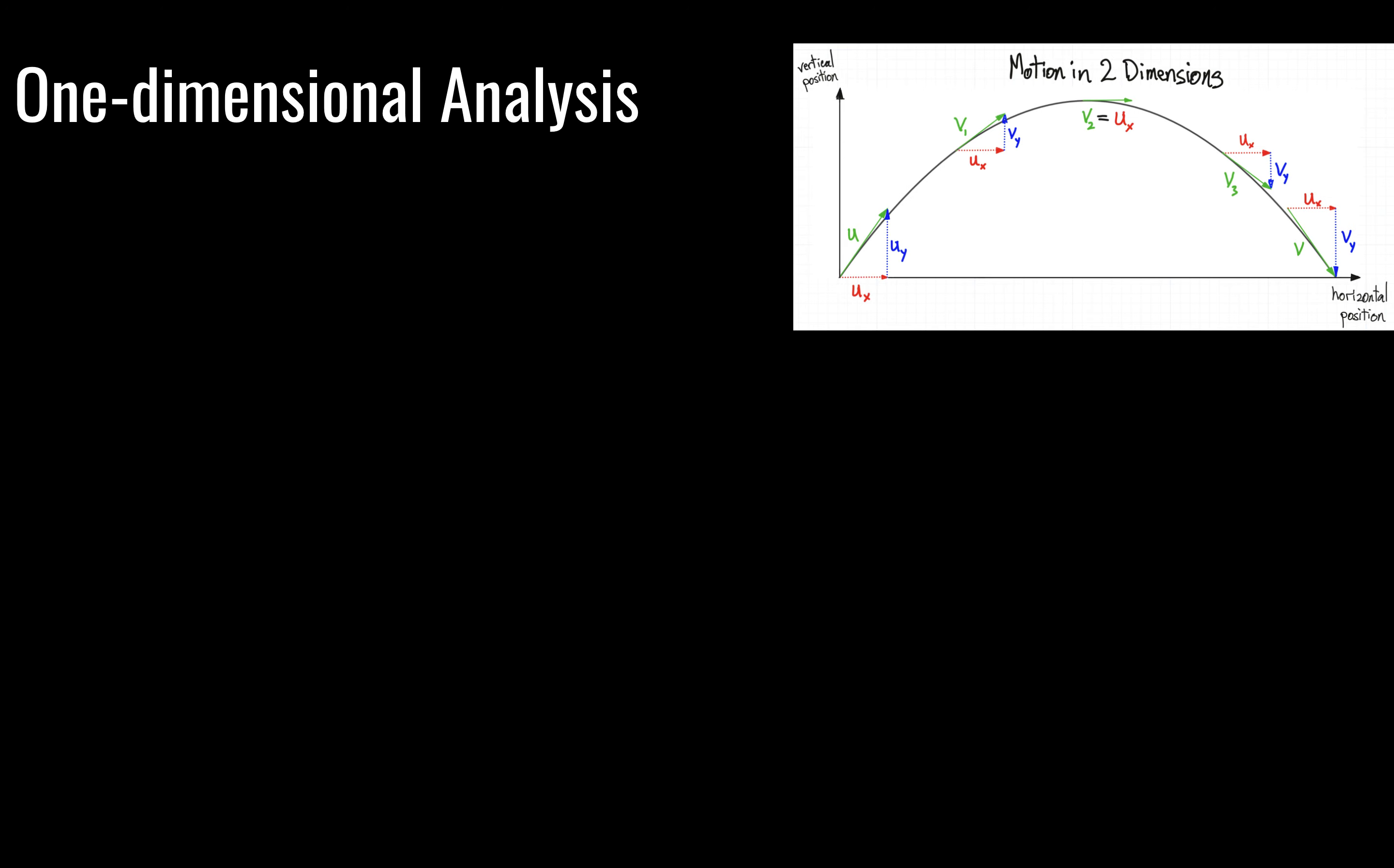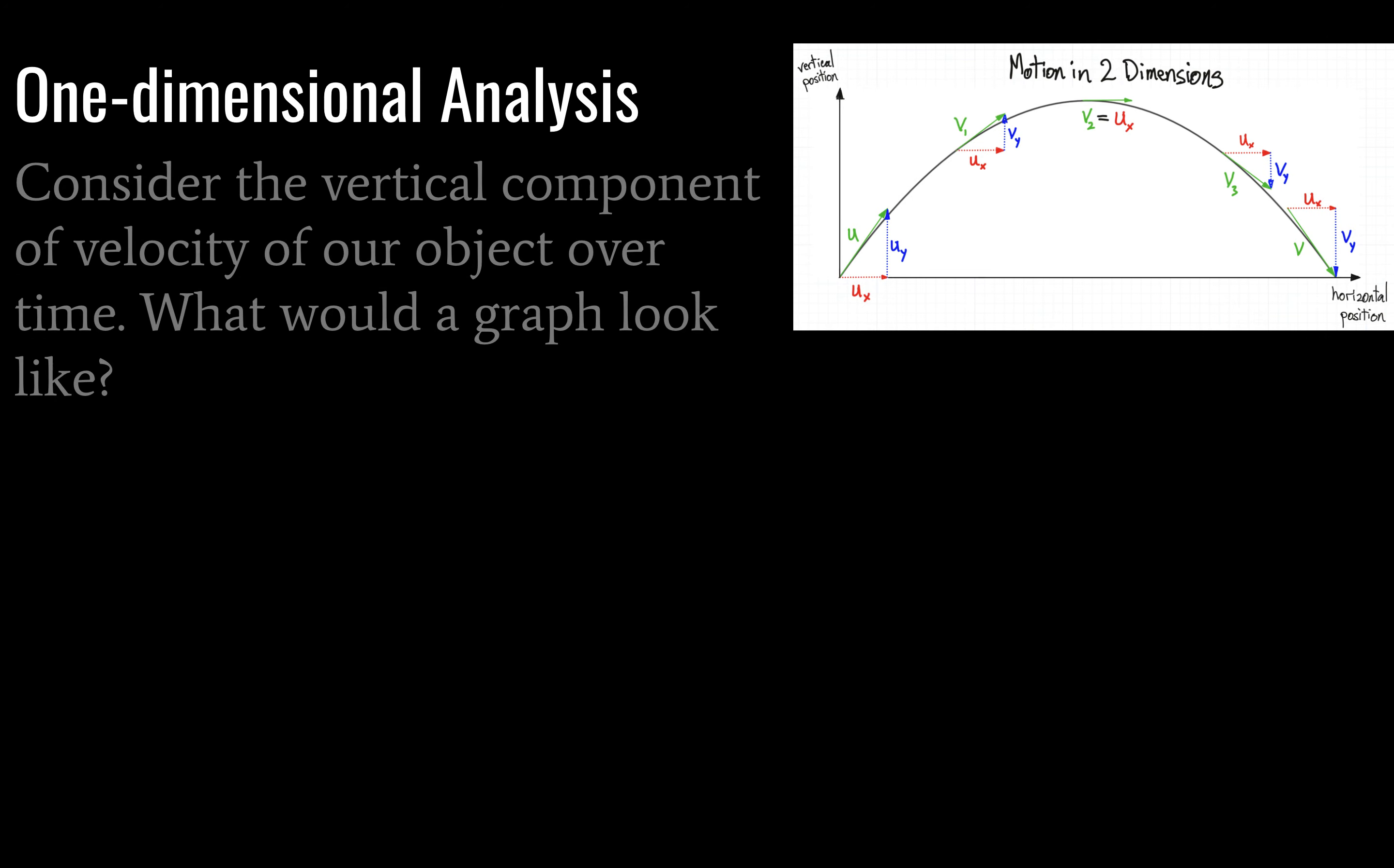One dimensional analysis. What are we dealing with here? So we've been looking at a chart showing the motion of an object through two dimensions. Consider the vertical component of velocity of our object as it's flying through the air over time instead of horizontal position. So what would that graph look like? So you replace horizontal position here with time, and we're just graphing the vertical position of the object as it moves through time. So what does that look like? You could pause the video here if you wanted to. I will tell you momentarily.